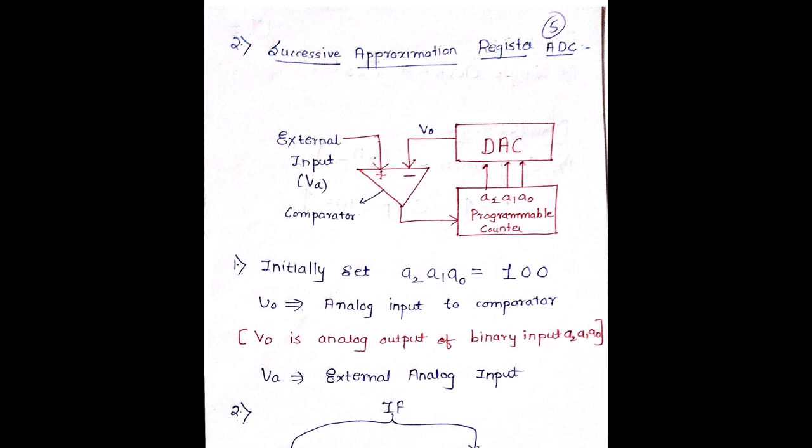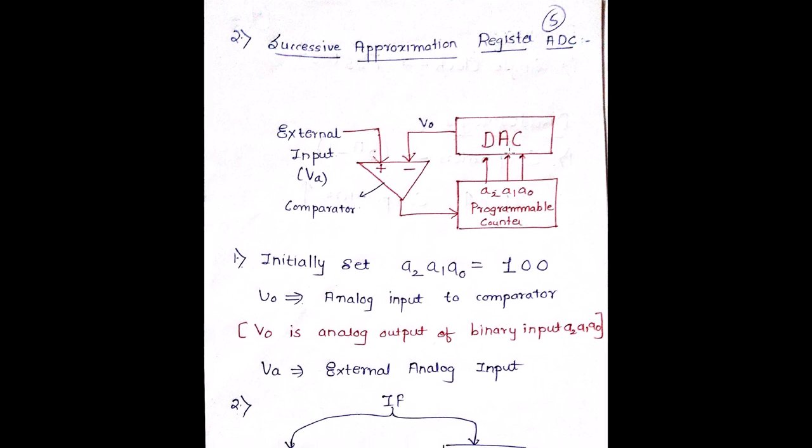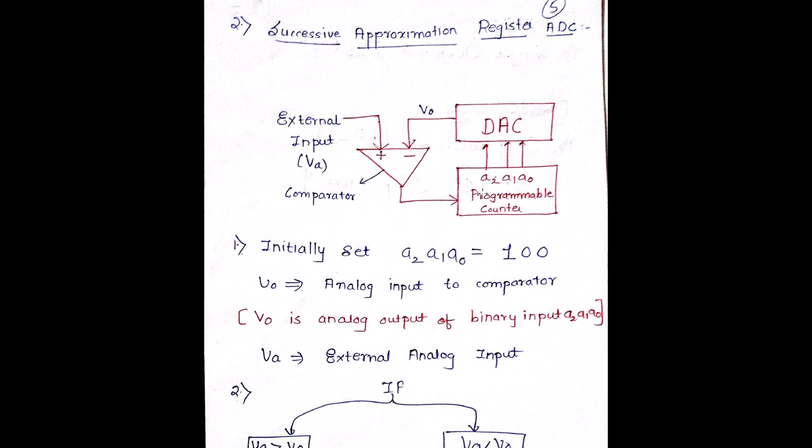So this topic will be about SAR ADC. We will be talking about the diagram and the operation, and then we will be talking about the advantages and disadvantages. So let's begin with the SAR or Successive Approximation Register ADC. Basically what happens is that we have this OPAMP which is acting as a comparator. It is a two input comparator which has an external input VA and the other is the analog output V0.